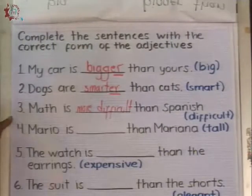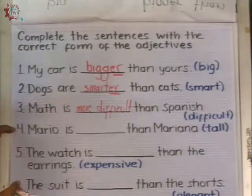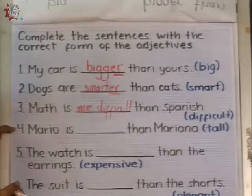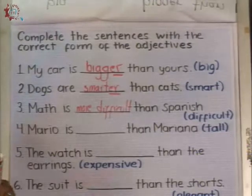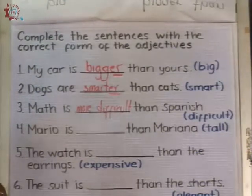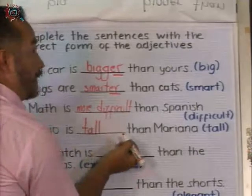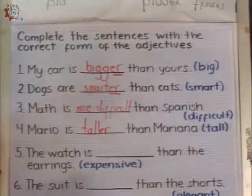Number four: Mario is ___ than Mariana — adjective: tall. The sound: tall — just one. So it's a short adjective. What else? Taller. That's good. Taller. Good.